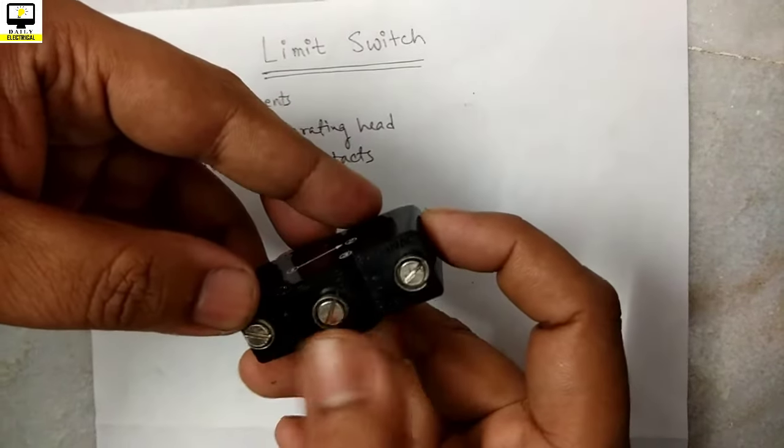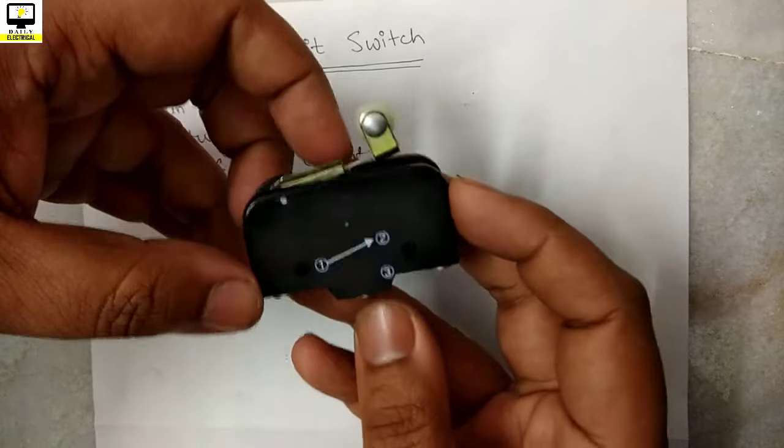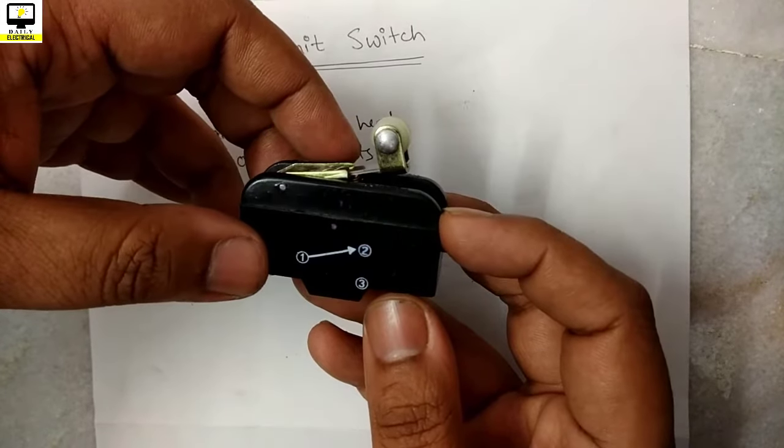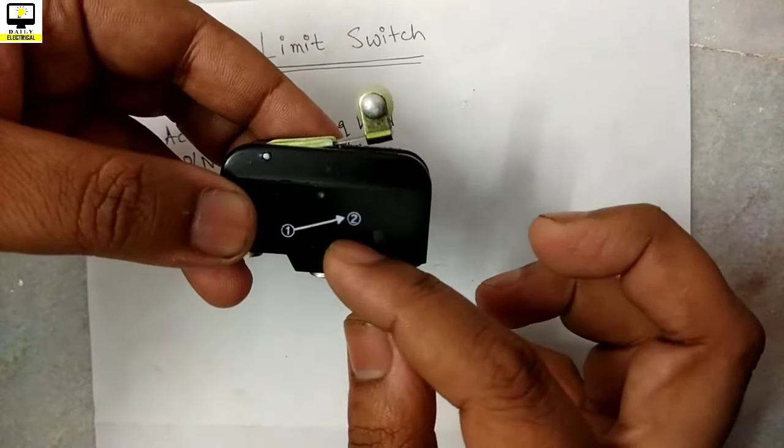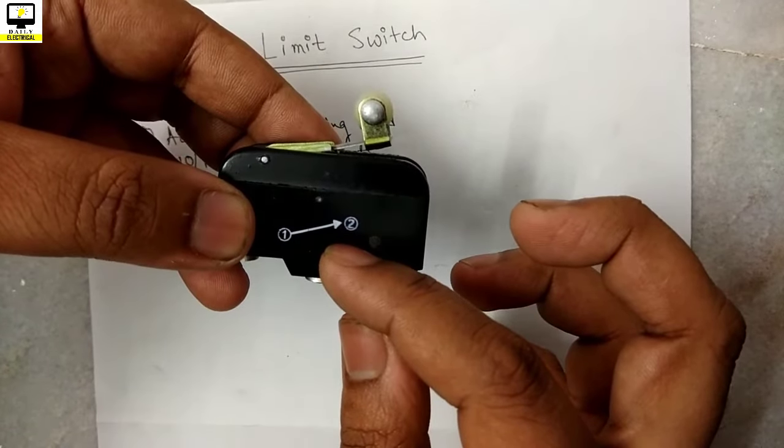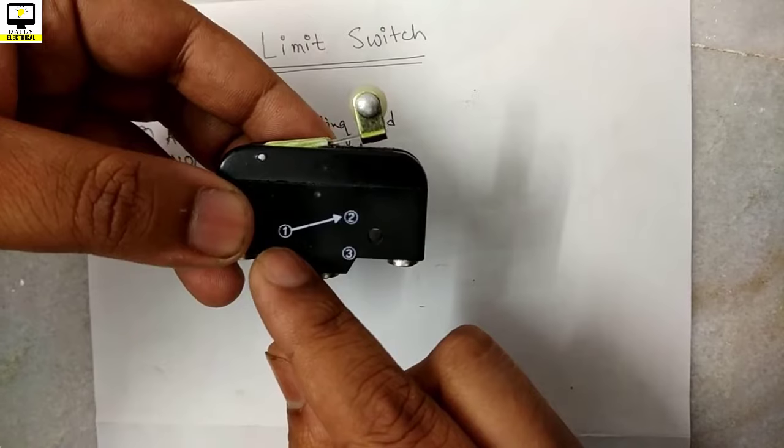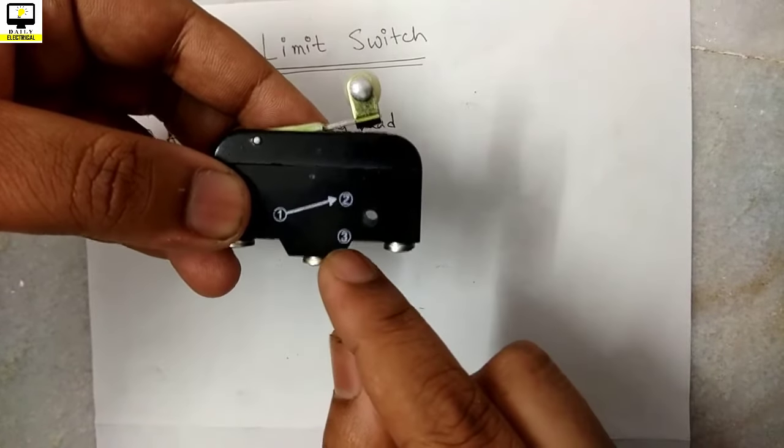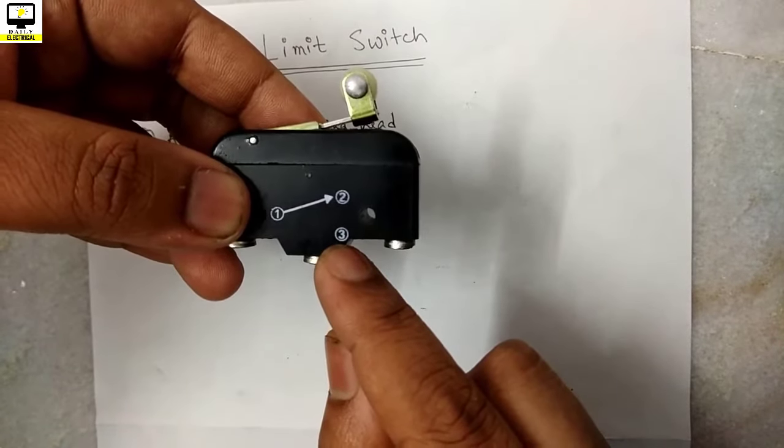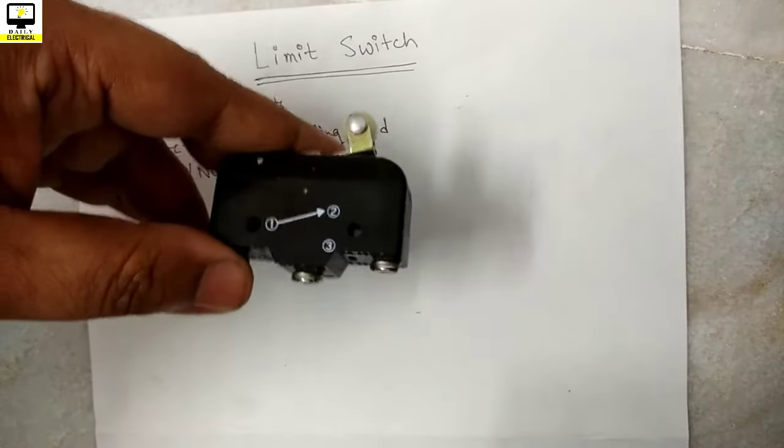Here is 1, 2, and 3 as per the connection. In a normal condition, 1 and 2 are interconnected, that means it is normally closed contact. 1 is the common contact and 3 is normally open contact. Let us check with the continuity tester.